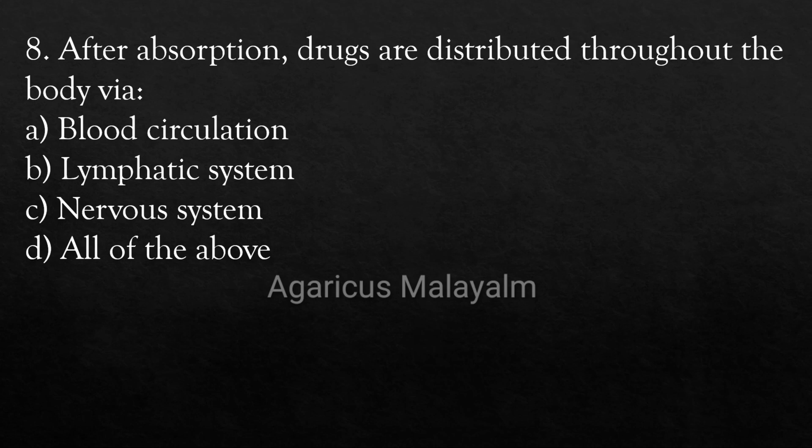Question 8: After absorption, drugs are distributed throughout the body via — Option A: Blood circulation, Option B: Lymphatic system, Option C: Nervous system, Option D: All of the above. Correct Answer: Option D — All of the above.